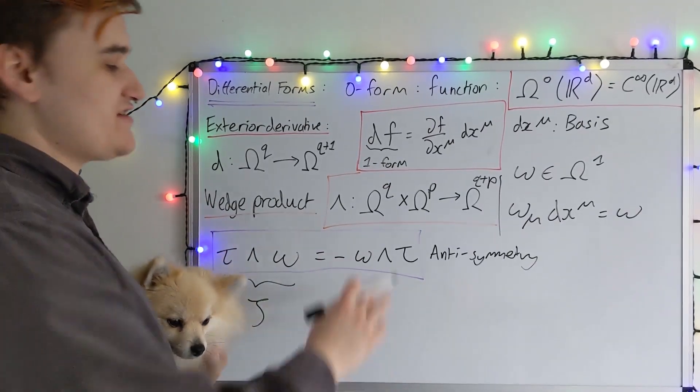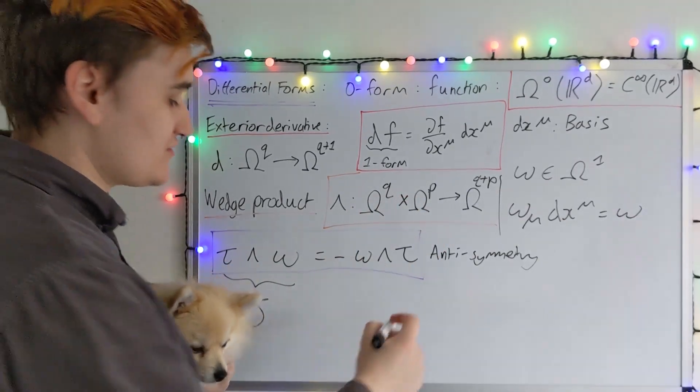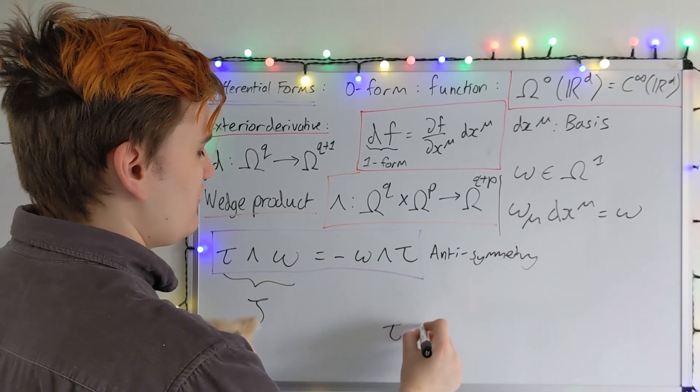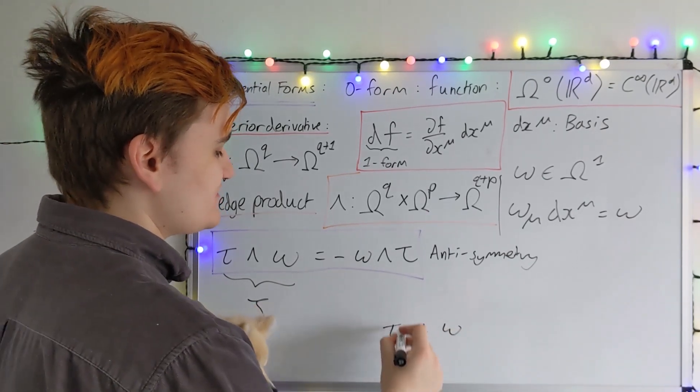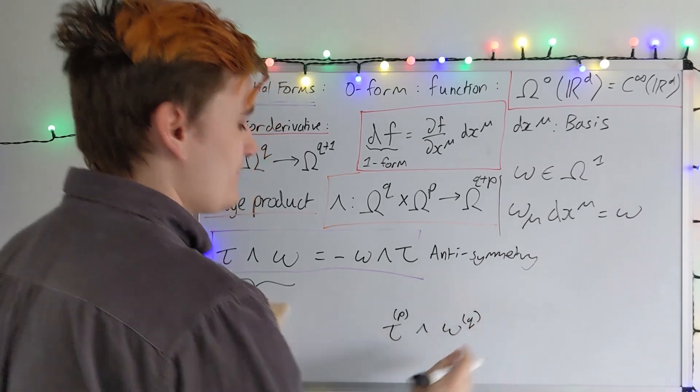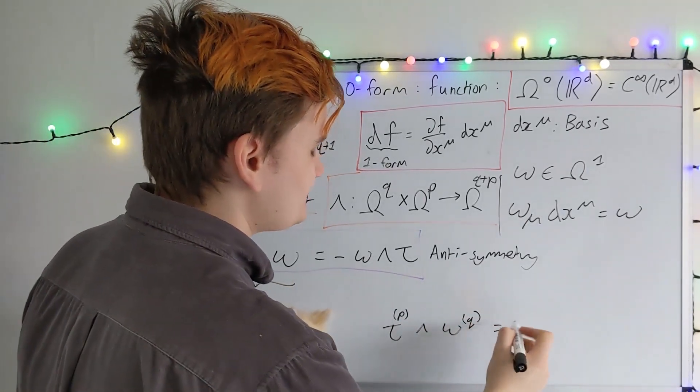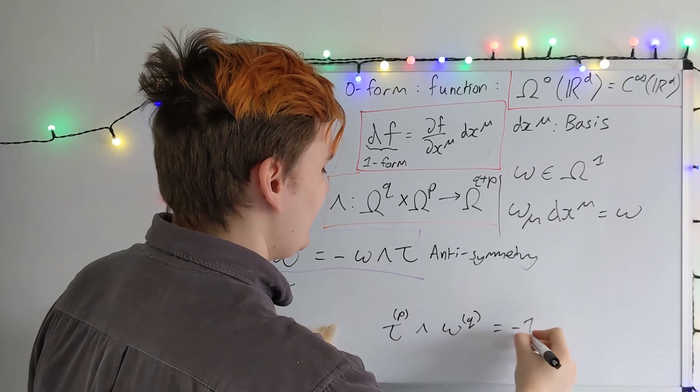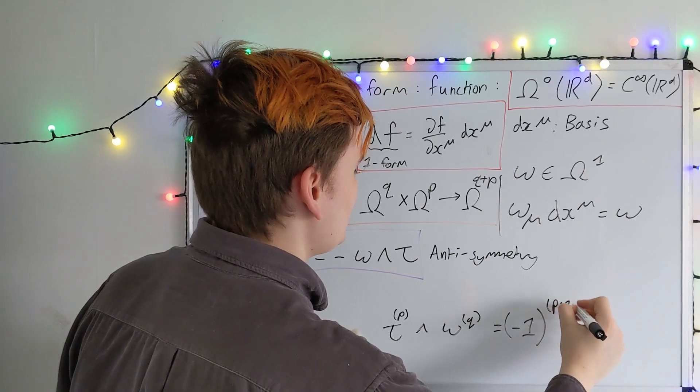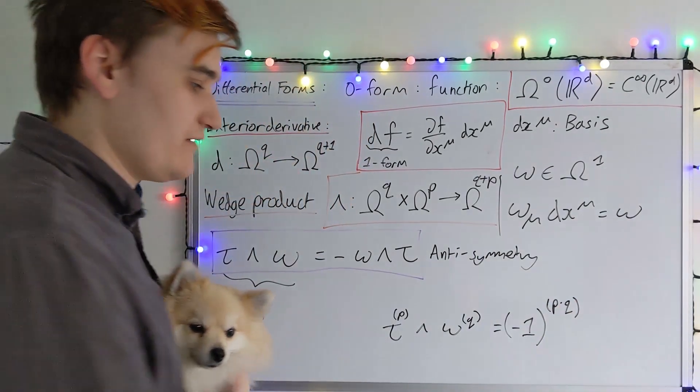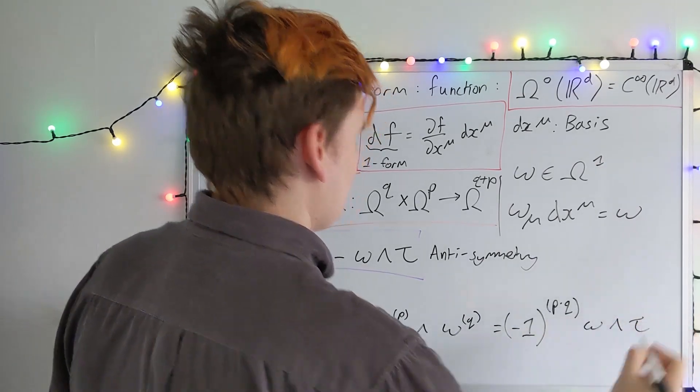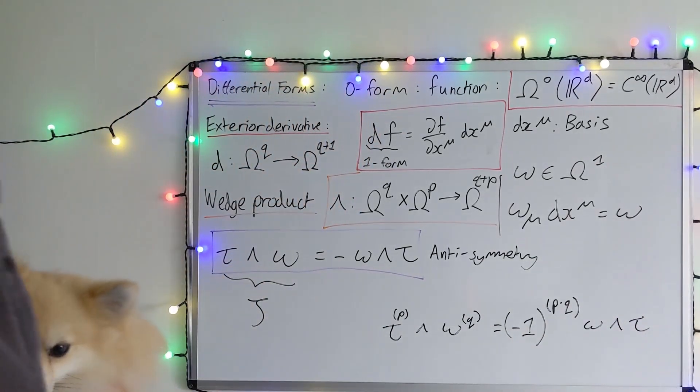And then we can just quickly generalize this to arbitrary degree forms. If tau wedge omega, if tau is, say, a P form, I'll just put in brackets up here, and omega is a Q form, then the product is anti-symmetric when P times Q is essentially an odd number. OK, so that's all the machinery we're going to need.